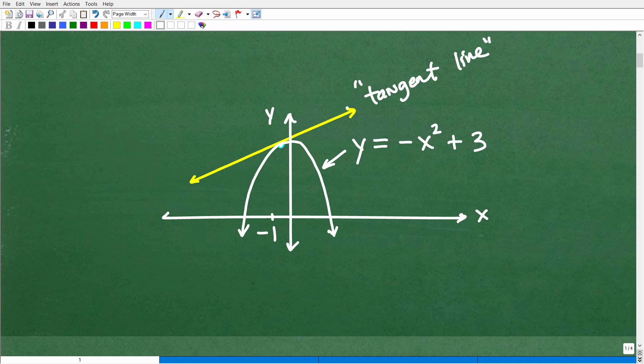Now, if you look at this tangent line, it has a particular slope to it, a particular angle. And it's touching this graph right there. If you look underneath where it's touching, that would be like negative one on the x-axis. So what is the question? Well, here's what calculus can do for us.